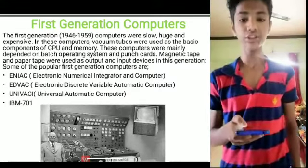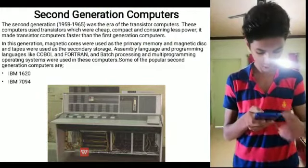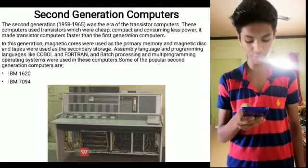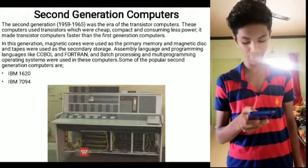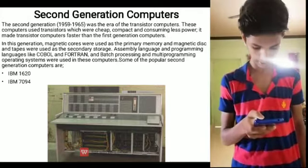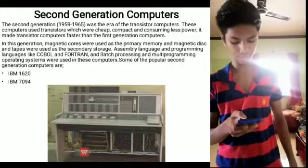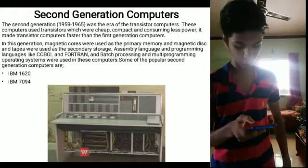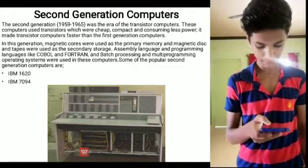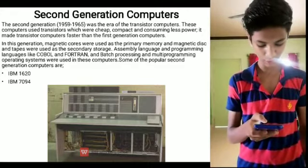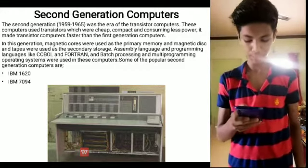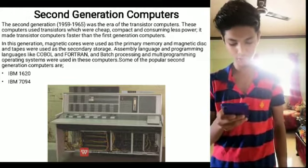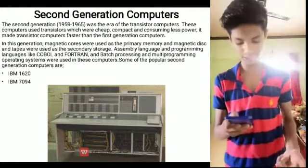Second Generation Computers (1959–1965): This was the era of transistor computers. These computers used transistors, which were cheap, compact, and consumed less power. This made transistor computers faster than first generation computers. Magnetic cores were used as primary memory, and magnetic disks and tapes were used as secondary storage. Assembly language, COBOL, and FORTRAN programming languages were used, along with batch processing and multiprogramming operating systems. Some popular second generation computers are IBM 1620 and IBM 7094.